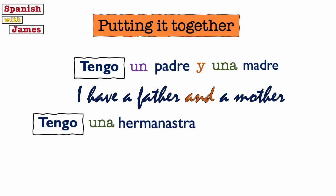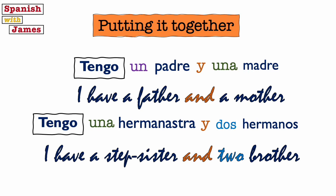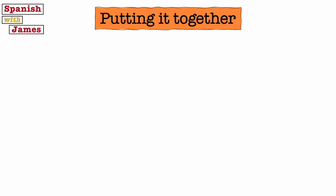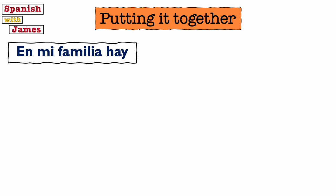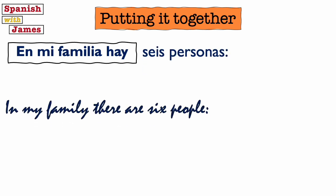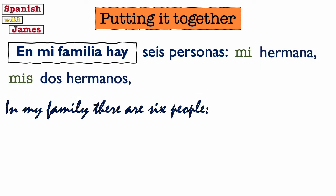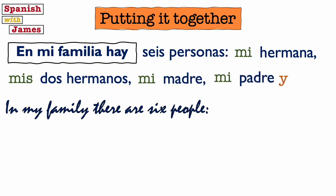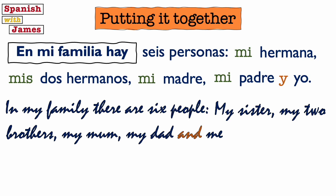We could also say tengo una hermanastra y dos hermanos — making hermano plural by adding an S — meaning 'I have a stepsister and two brothers'. Using the other phrase: en mi familia hay seis personas — in my family there are six people — then introduce them: mi hermana, mis dos hermanos, mi madre, mi padre y yo. In my family there are six people: my sister, my two brothers, my mum, my dad, and me.